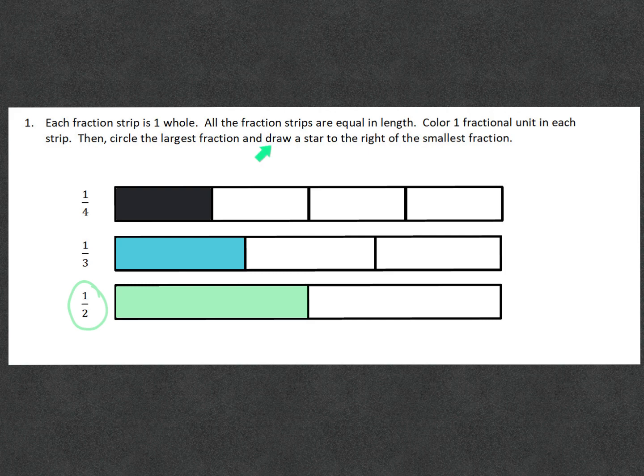Next up, we have to draw a star to the right of the smallest fraction. The smallest fraction is going to be one fourth because the box that is colored in is the smallest out of the three.